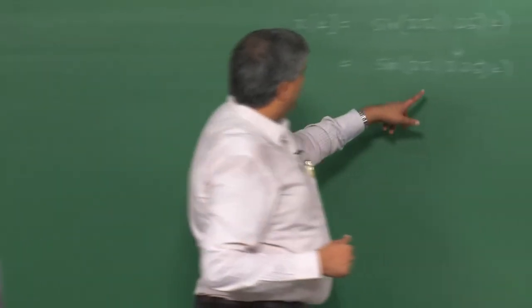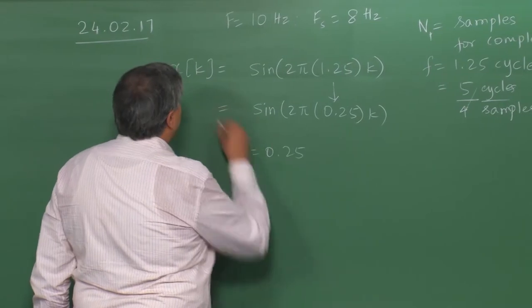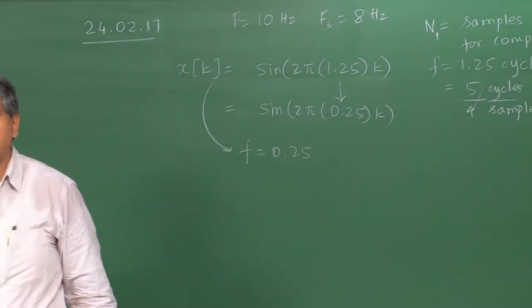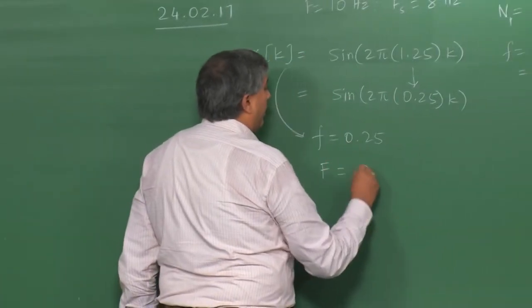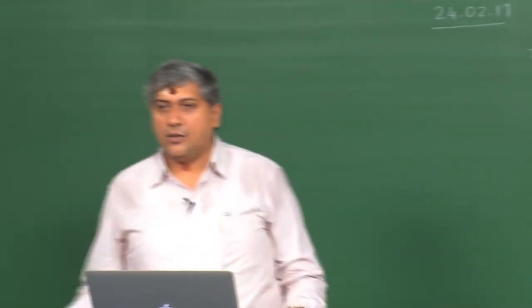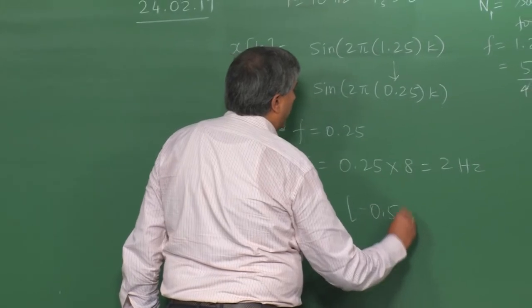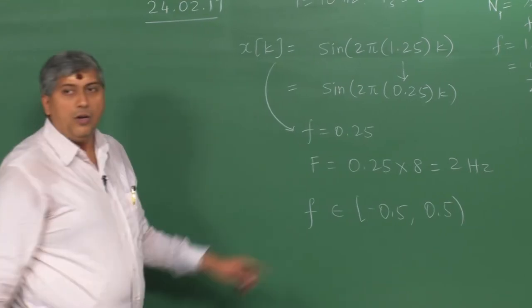Going back to the sampling theorem: because of aliasing, when we want to reconstruct the continuous time signal, the signal manifests at frequency 0.25, so x[k] has this frequency. When I try to reconstruct, I will end up with a 2 hertz continuous time signal instead of the original 10 hertz signal. This has occurred because I have not sampled fast enough, but that is only half the story.